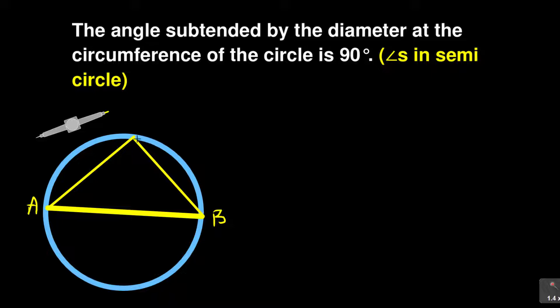The angle that is formed — we have talked about subtending — that particular angle is a special angle and it is 90 degrees. So it's like a right angle. So we want to prove this particular theorem. Don't forget we have a center somewhere there.